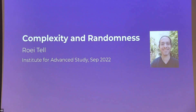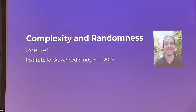Hi everyone. My name is Rory. My area of study is rotational complexity and algorithmic randomness and algorithms. I'm going to talk about some directions I've been interested in working on over the last couple of years.